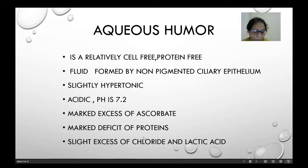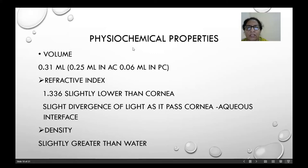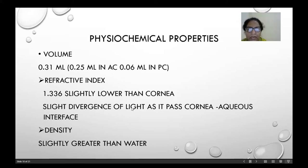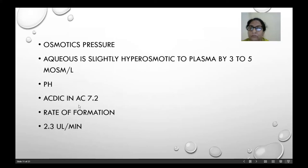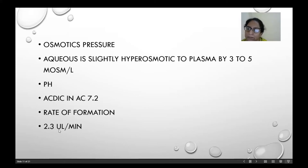Chloride and lactic acid are more in aqueous humor. Its physiochemical properties: volume is 0.31 ml — 0.25 ml in the anterior chamber and 0.06 ml in the posterior chamber. Refractive index is 1.336, slightly lower than that of the cornea, causing slight divergence of light. Density is slightly greater than water. Osmotic pressure is slightly hyperosmotic to plasma by 3 to 5 milliosmoles per litre. It is acidic at pH 7.2 and rate of formation is 2.3 microlitres per minute.